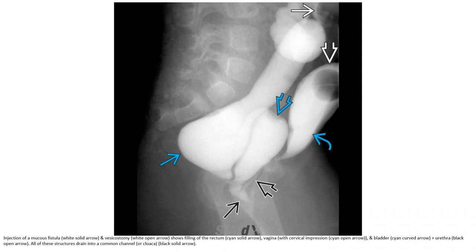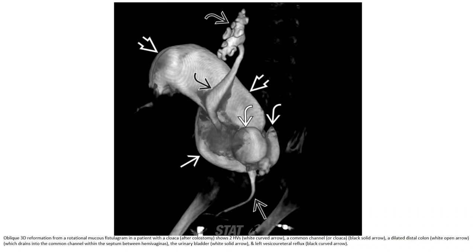In terms of the mucous fistulogram and vaginostomy, contrast fills parts of the rectum, vagina, and bladder plus urethra. All of these structures drain into a common channel in cloaca malformation, demonstrating the three-dimensional formation. In a patient with cloaca type two and hemi-vagina, a common channel of the distal colon drains into a common channel, with a septum between the hemi-vagina, the urinary bladder, and the left duplicated ureteral insertion.